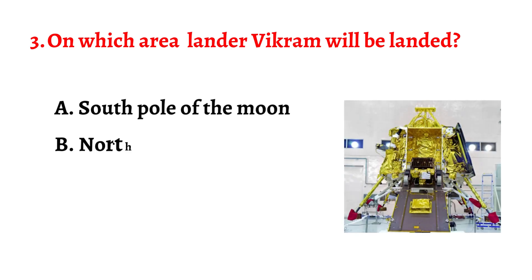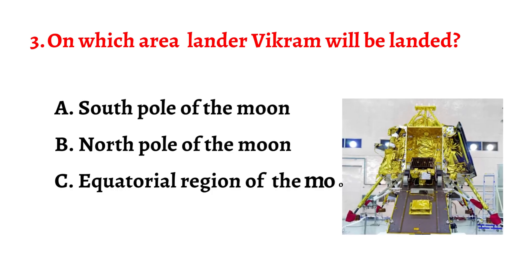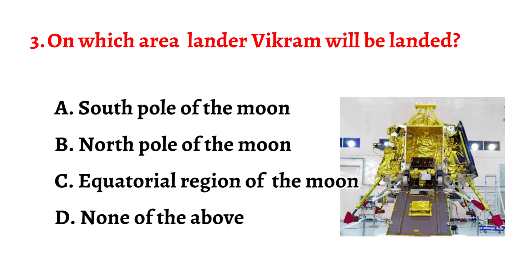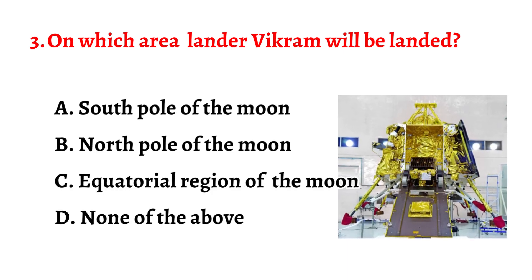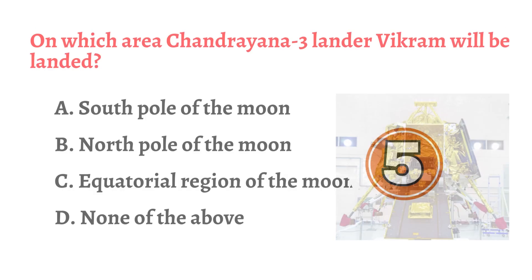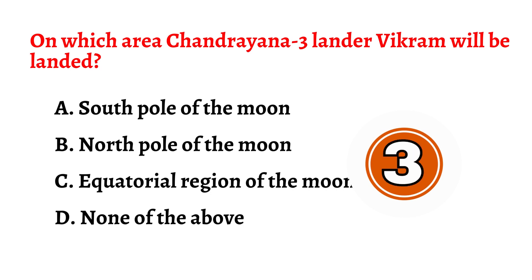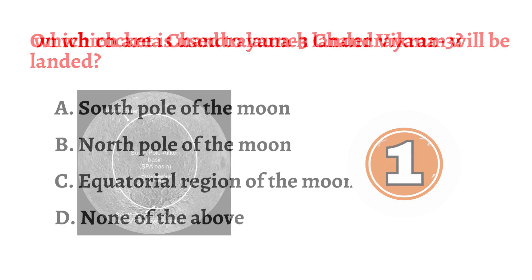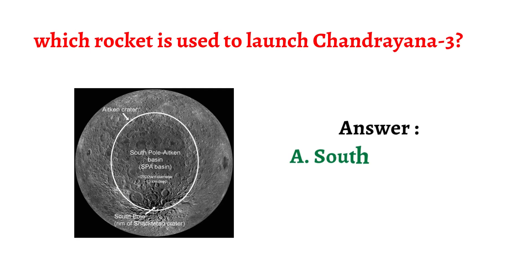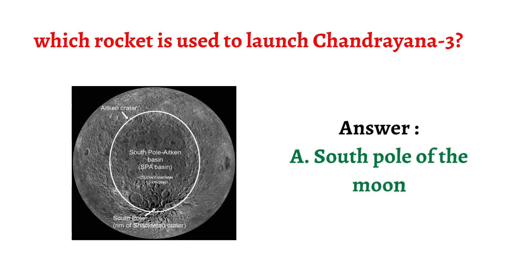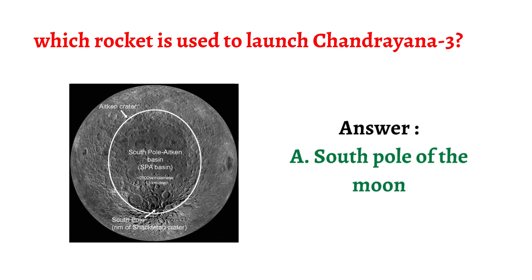Question number three: On which area will lander Vikram be landed? The correct answer is option A: the South Pole of the Moon.